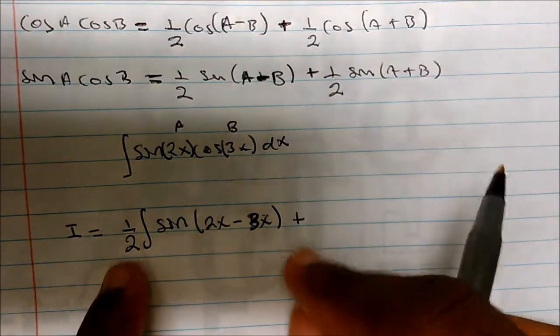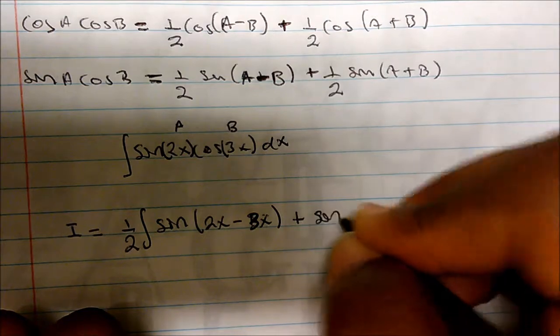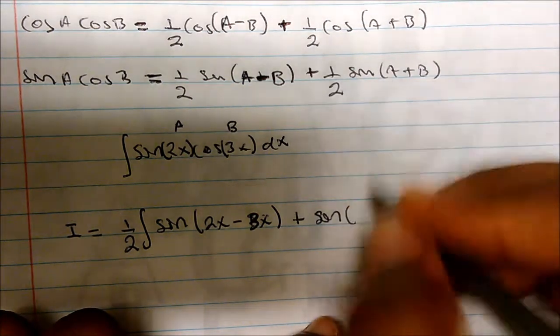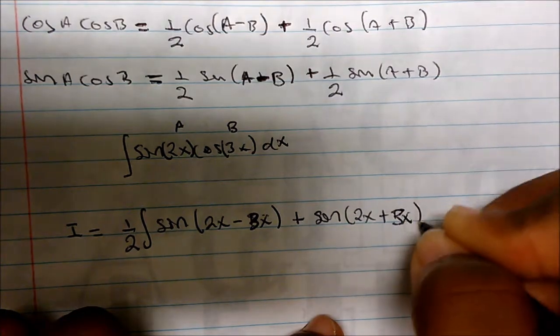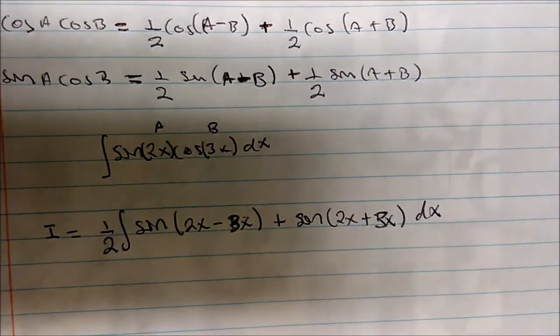Well because we factor out a one half, we just have in this case sine of a, which is 2x, plus 3x, which is b, and we have our dx here.